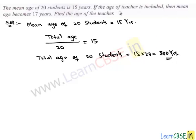Now, we are given if teacher age is included, then the mean age becomes 17 years. We don't know teacher age, so we assume x is the age of teacher.